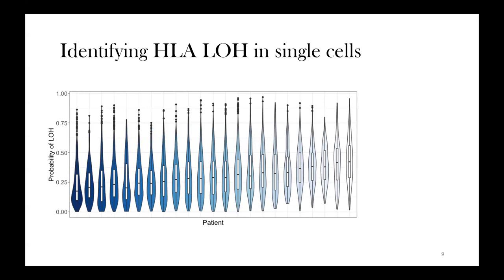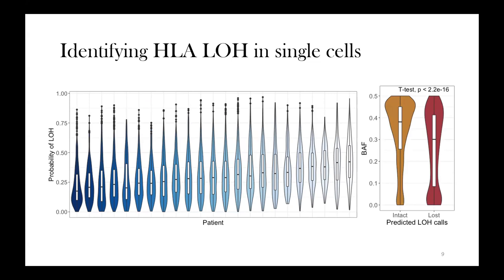Each point shown here is a cell, with the y-axis showing the probability of an LOH event in that cell, grouped by patient — showing quite a range of probabilities. While I don't have ground truth data in single-cell data, I can calculate the B-allele frequency across all of chromosome 6, where the HLA genes lie. Cells predicted to have undergone LOH show a much higher B-allele frequency deviation, giving me great confidence this works, and this replicates across two different cohorts.